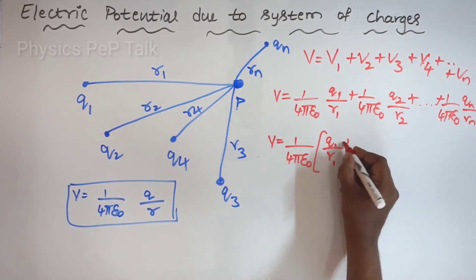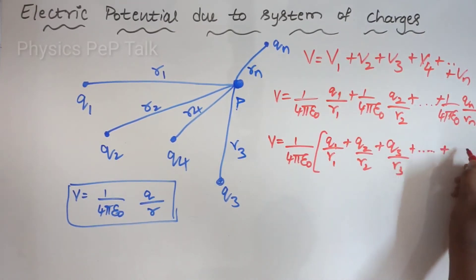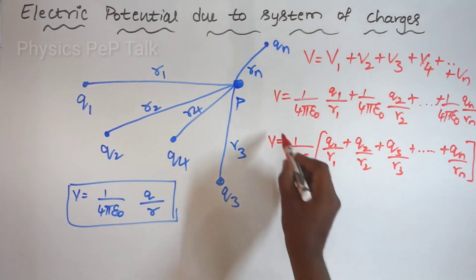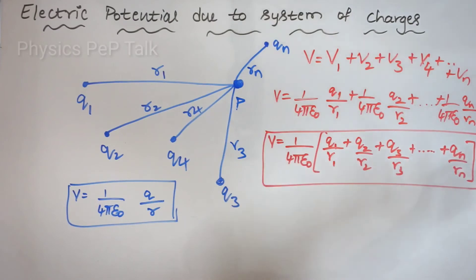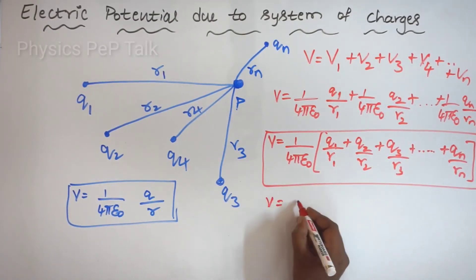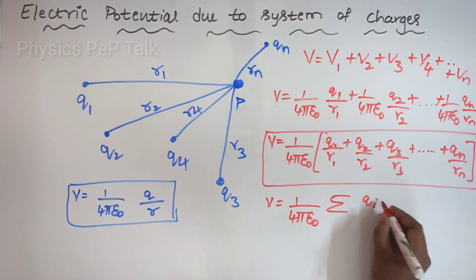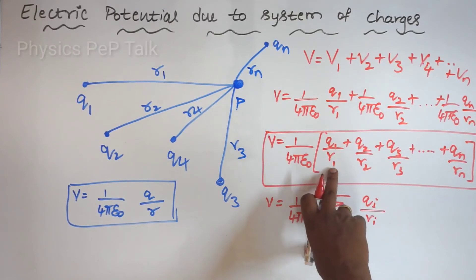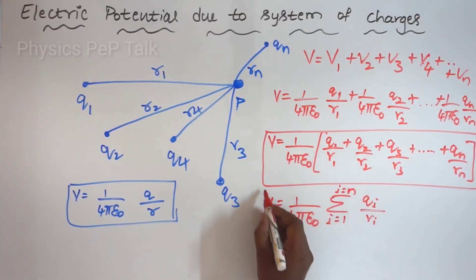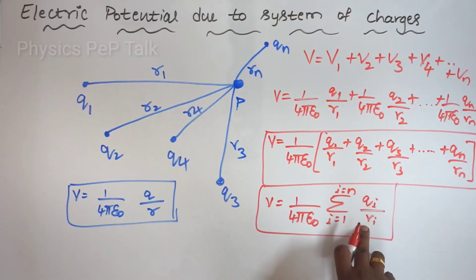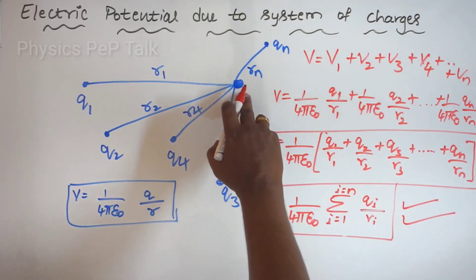Taking 1 by 4 pi epsilon naught as common: Q1 by R1 plus Q2 by R2 plus Q3 by R3, and so on and so forth, last term Qn by Rn. This is the total electric potential at point P due to the presence of all these charges. We can write this in summation form: V is equal to 1 by 4 pi epsilon naught, summation of Qi by Ri. This is the expression for the electric potential at point P due to a system of charges.